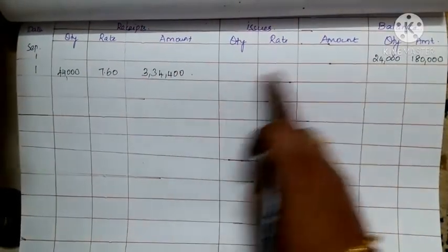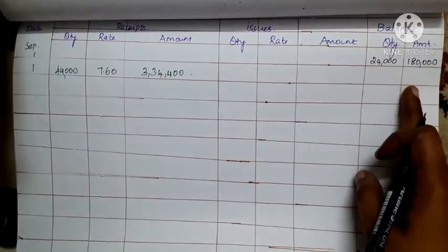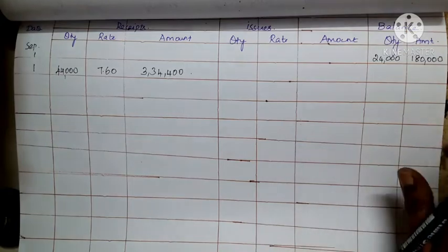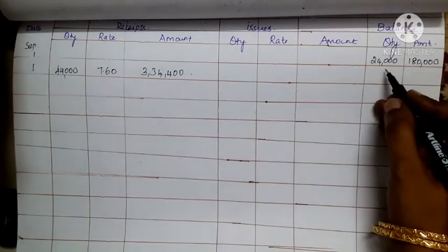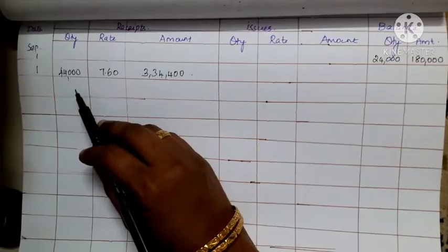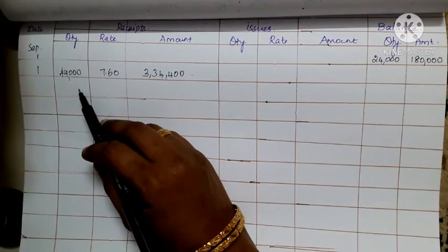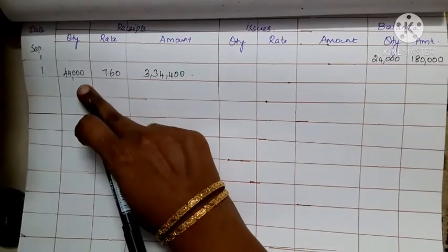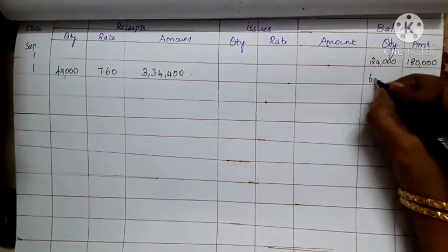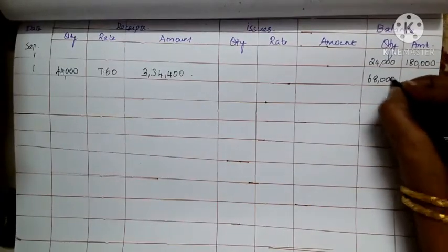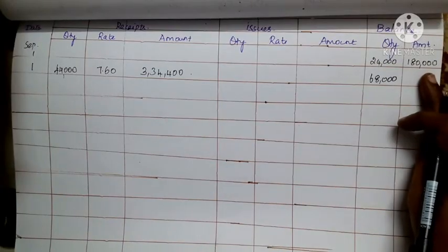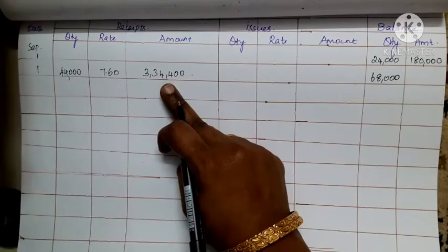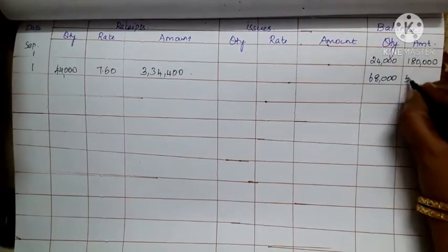If you want to add the receipts, add them to the balance. Issues reduce the balance. So the combined balance quantity is 24,000 plus 44,000 equals 68,000. The combined amount is 1,80,000 plus 3,34,400 equals 5,14,400.